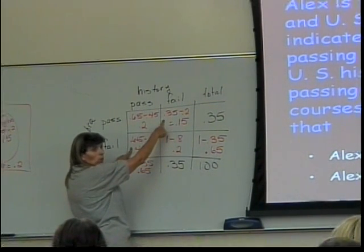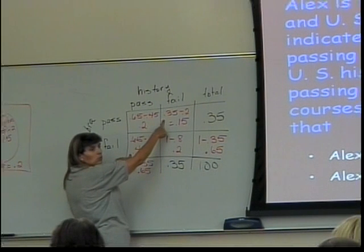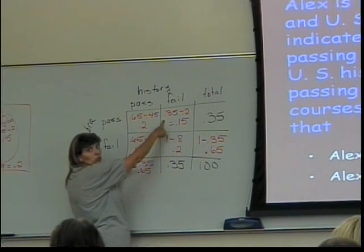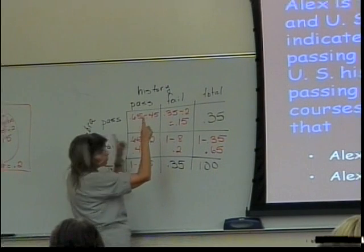So that means he can't pass both. That's out. Passed only one course here? Yes. Passed only one course here? So those two can be added together to get 0.6.